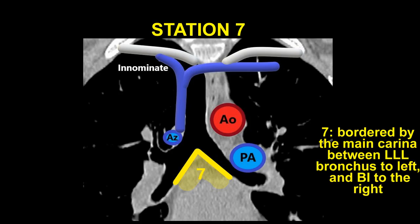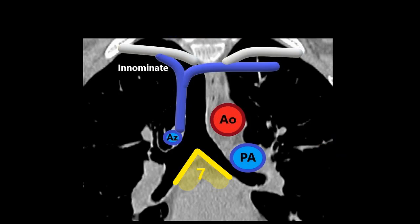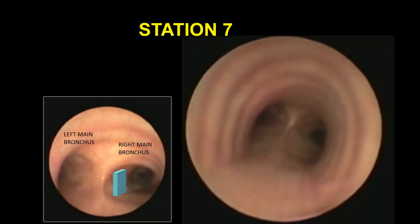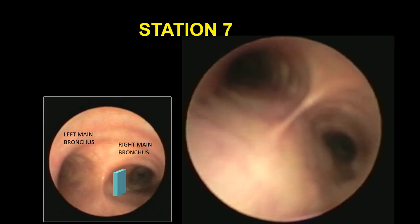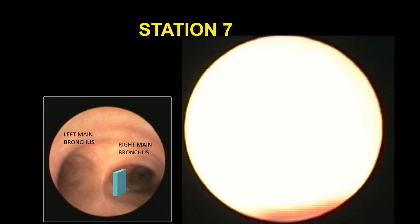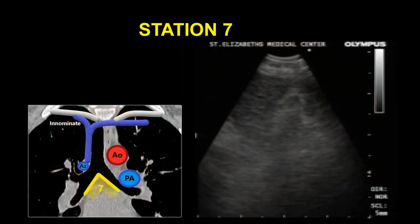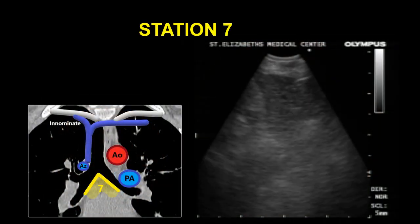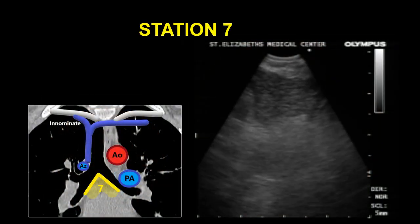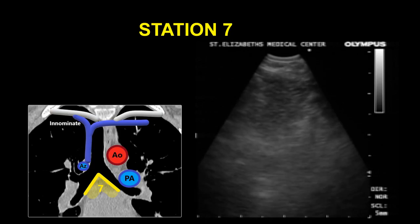Station 7, the subcarinal nodal station, is bordered by the carina of the trachea to the upper border of the lower lobe bronchus on the left and the lower border of the bronchus intermedius on the right. Station 7 can be visualized by placing the scope in the proximal right or left main stem bronchus with the probe facing medially. In this video, the scope is in the right main stem bronchus and the lymph node can be seen above the left atrium.